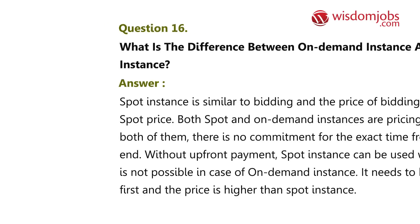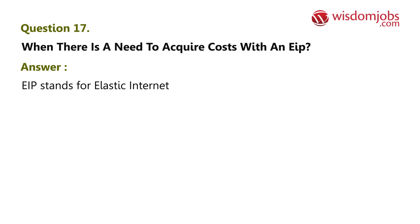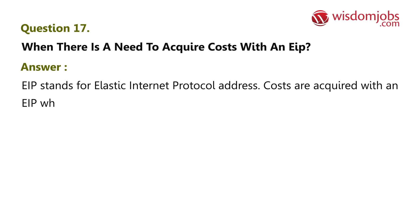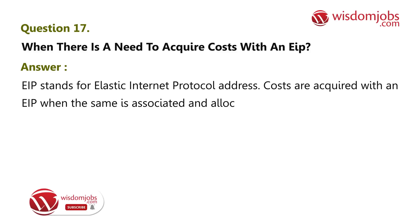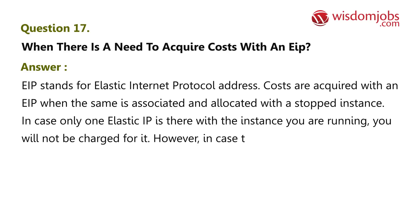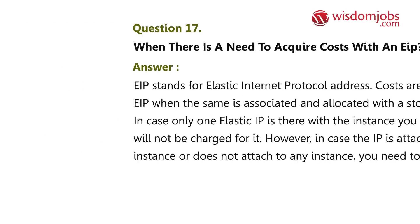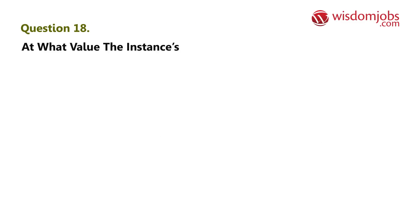Question 17: When is there a need to acquire costs with an EIP? Answer: EIP stands for Elastic IP address. Costs are acquired with an EIP when it is associated and allocated with a stopped instance. If only one Elastic IP is there with a running instance, you will not be charged for it. However, if the IP is attached to a stopped instance or does not attach to any instance, you need to pay for it.